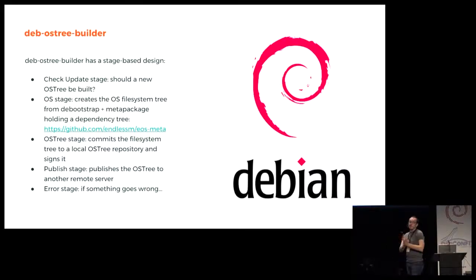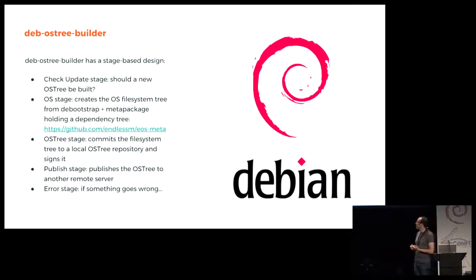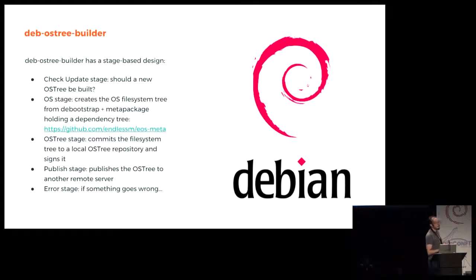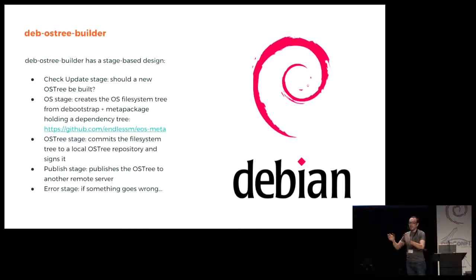That effectively will have the fully deployed filesystem tree as if it was a regular distro. It takes that, creates a commit to a local OSTree repository during the OSTree stage, signs it with the GPG key that you give it. Then finally it publishes that OSTree to another server or to a set of different servers.